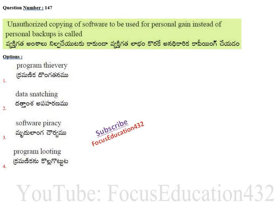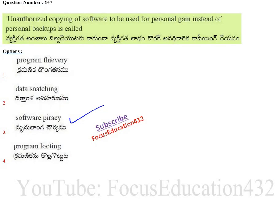Next question: unauthorized copying of software — for example, copying MS Office or SQL Server without permission from the company that developed it, and using it for personal gain instead of personal backup — is called software piracy. Software piracy means copying something for which you don't have permission and using or distributing it on other machines.